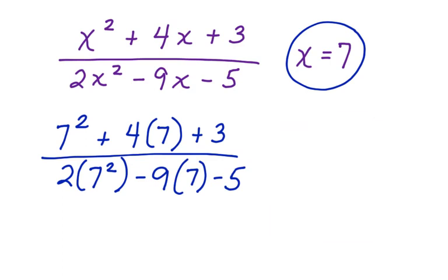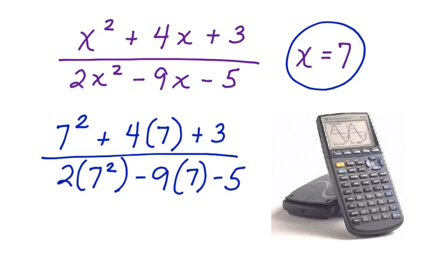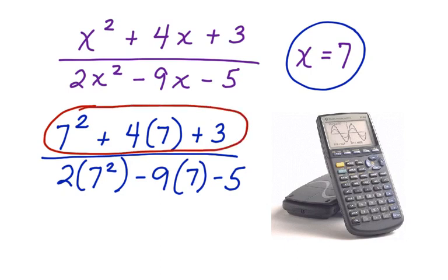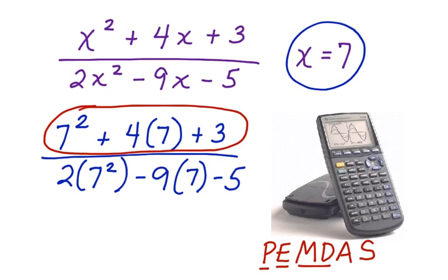Now we can use our calculator. One of the most wonderful things about the calculator is we can actually put all of the numerator into the calculator simply by entering it. So we can put 7 squared plus 4 times 7 plus 3 into our calculator. What will happen is our calculator automatically knows to use the order of operations — here's the order of operations at the bottom of the screen. The calculator in its memory already knows to do that, so it will solve it according to the order of operations. When we evaluate the numerator, we get an answer of 80.